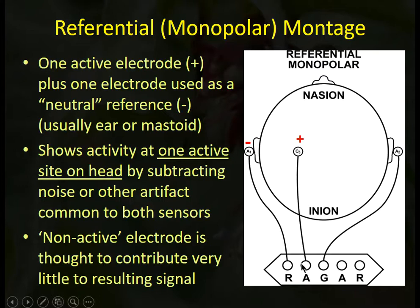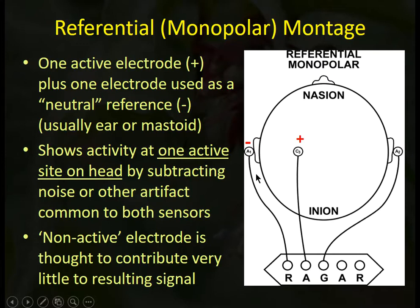We have a positive input, often called the active sensor, and a negative input often called the reference sensor — though that becomes confusing because the ground is also called the reference. This is called a referential or monopolar montage, which means one active sensor is on the scalp and the other active sensor is on a neutral site like the earlobe or the mastoid bone. Some people even suggest putting the reference sensor on the tip of the nose.